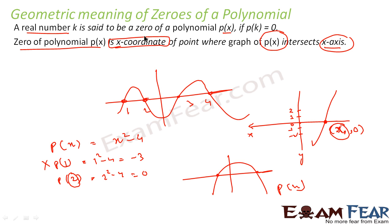To find zeros, draw the graph and find where it meets the x-axis. At those points, find the x-coordinate, because the y-coordinate is always zero on the x-axis. We are concerned only with the x-coordinates.